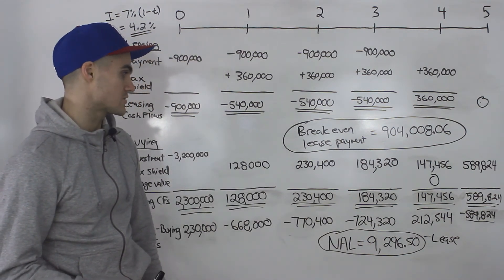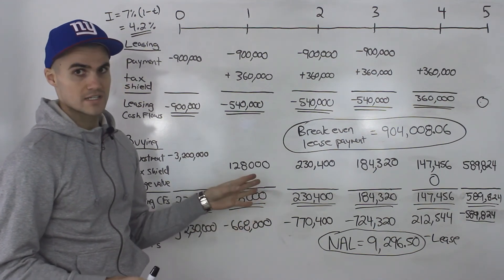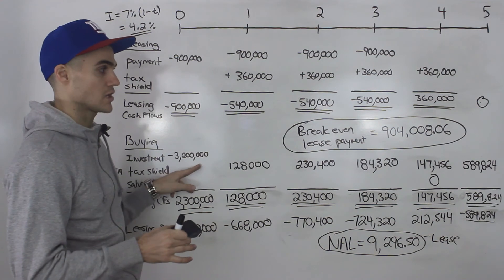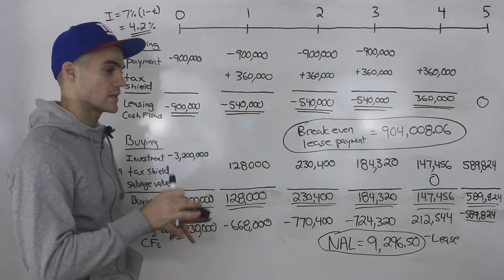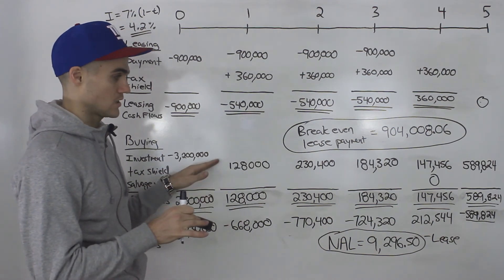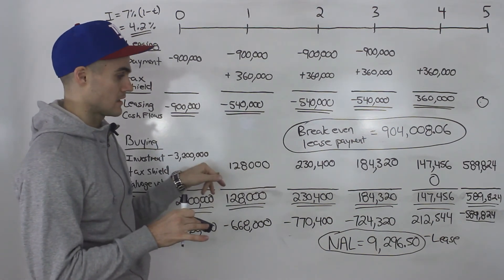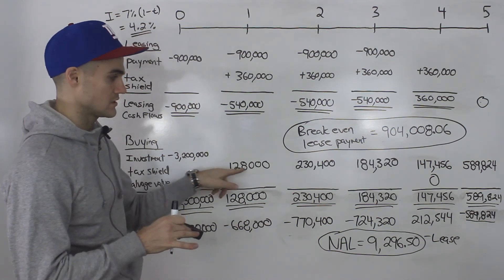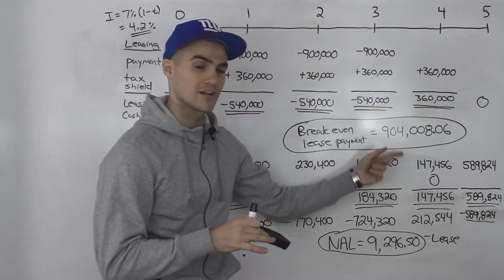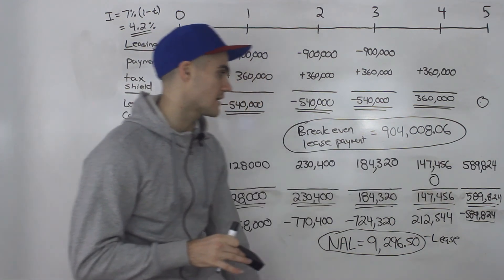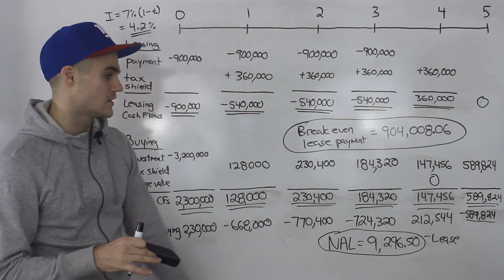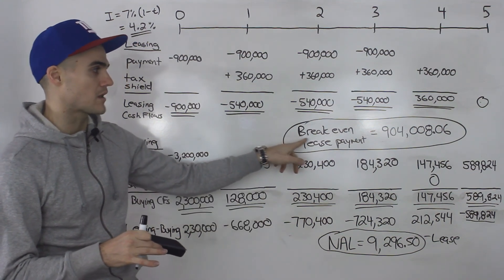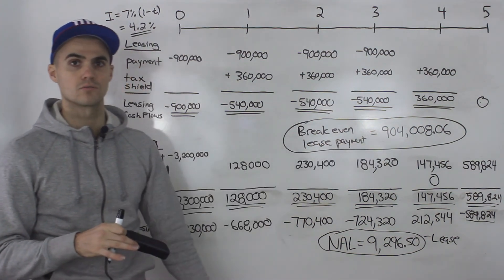Those are the answers for this CCA depreciation question. Notice the key differences: with straight line, the tax shield row was constant; with CCA, the tax shield changes every year, plus we had the terminal loss in year five. We should lease the machine, and the break-even lease payment is $904,008.06.